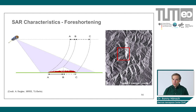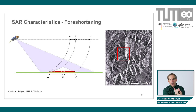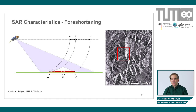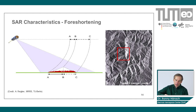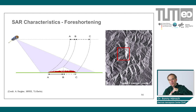Other effects include foreshortening. Since with radar we are measuring distances rather than angles — an optical camera measures angles — the position of an object in the image depends on its distance to the sensor. So if you have an elevated object like a mountain, the top is already closer to the sensor than a point on the ground. This means the slope facing the sensor gets squeezed together in the image, while the slope facing away is extended.